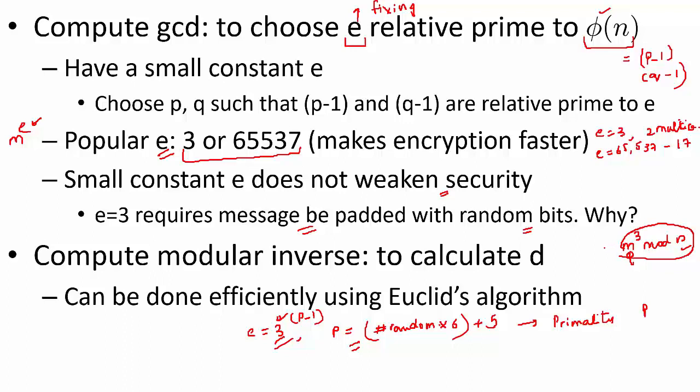Okay, that is with respect to computing the gcd, that is choosing e relative prime to φ(n). To decrypt, you also need to calculate d, and d, as I said, has a relation that ed should be 1 mod φ(n). This is the inverse operation. So in order to calculate d, you essentially have to do a modular inverse, but this can be done efficiently using something called Euclid's algorithm. So again, there are ways to do this. So this is not so difficult once you know φ(n).